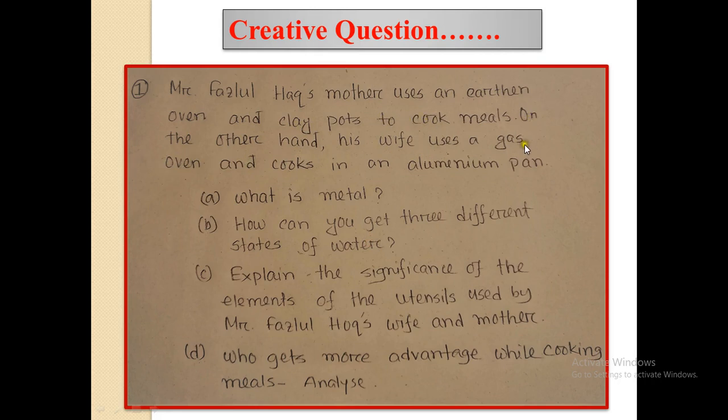First question: What is metal? How can you get three different states of water? Explain the significance of the elements of the utensil used by Mr. Fosul Hawk's wife and mother.